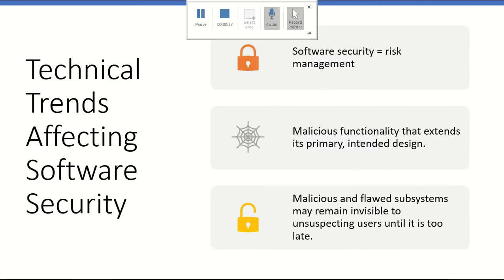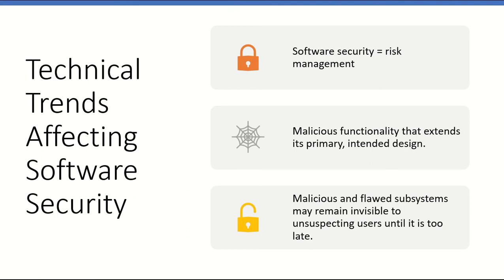In software security, technical trends affect the software security at the time of software implementation in different ways. People think that software security equals risk management, but most of the time when developers are developing software, even if they have some security concern, it doesn't mean that all the time software security will mitigate all the risks related to security. For every software they're developing, they need to analyze their vulnerabilities and other threats.